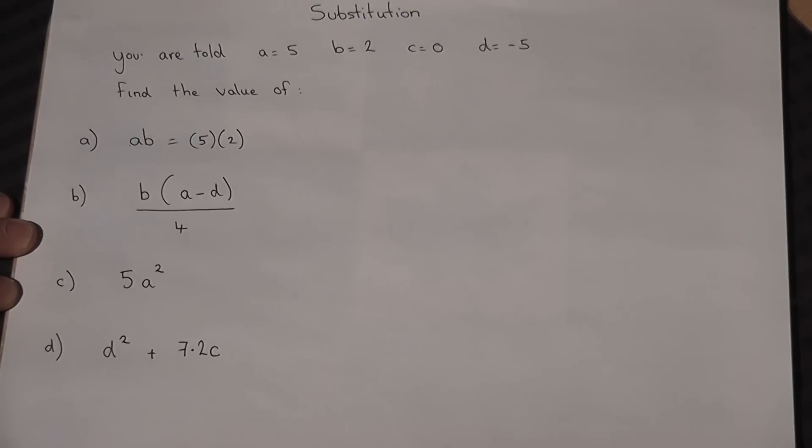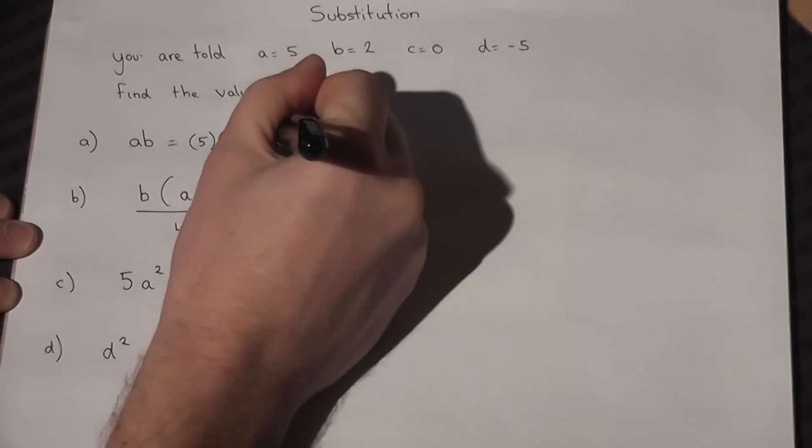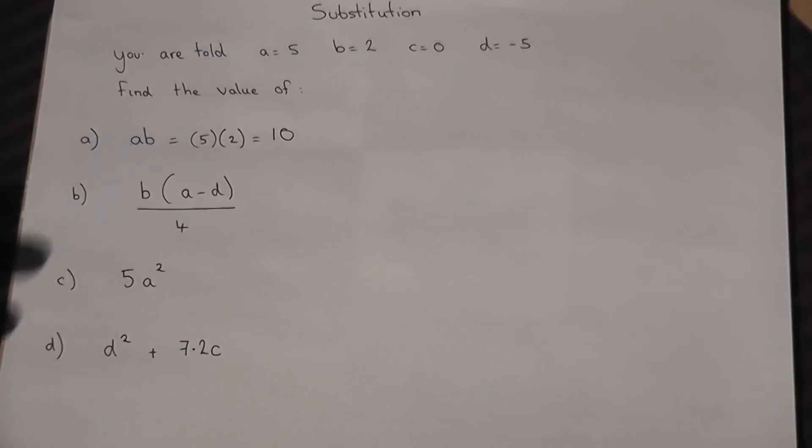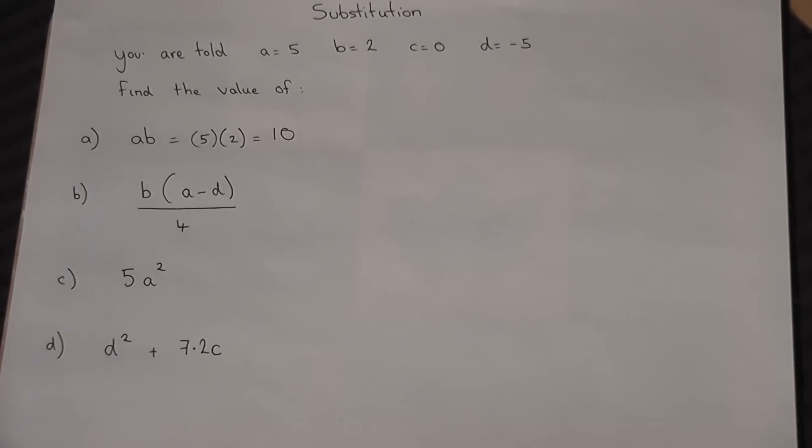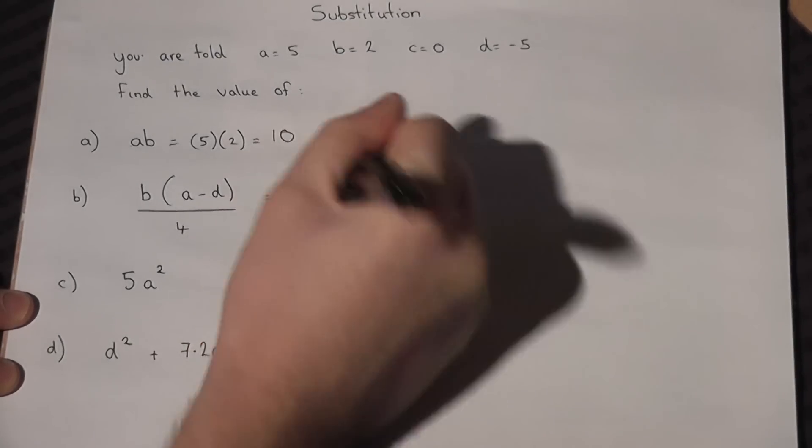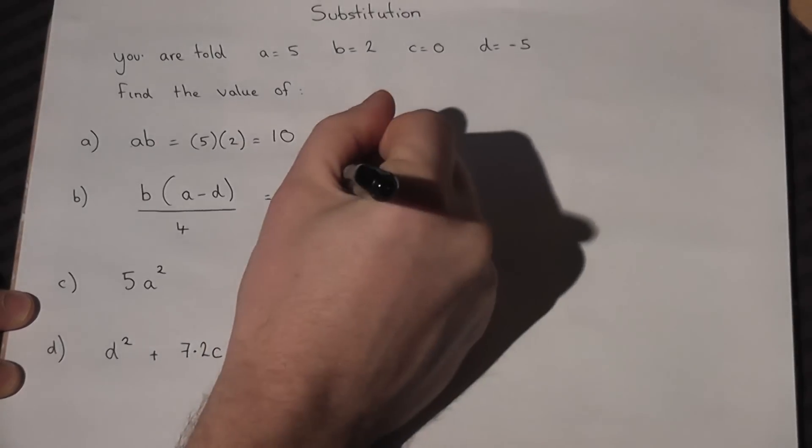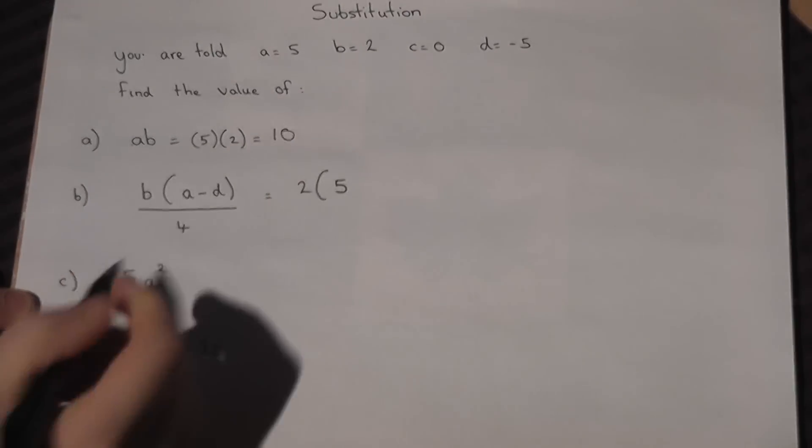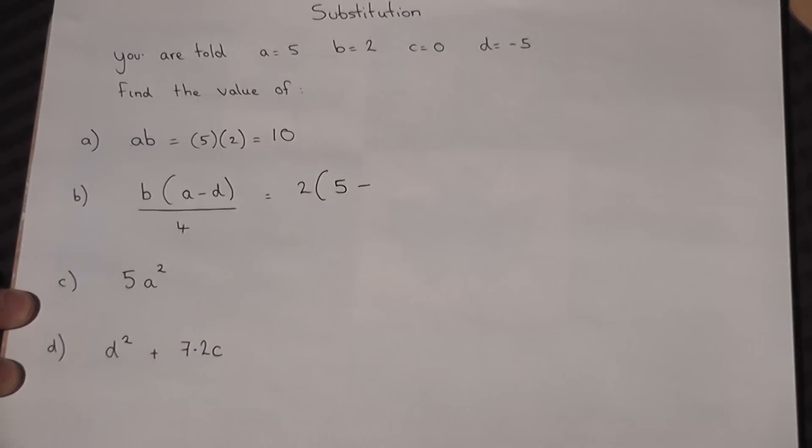The second one: there are now three terms involved, so again we write out the entire thing. So b equals 2, a is 5. Now we don't take away d, but d is minus 5, and then we have to put it over 4.